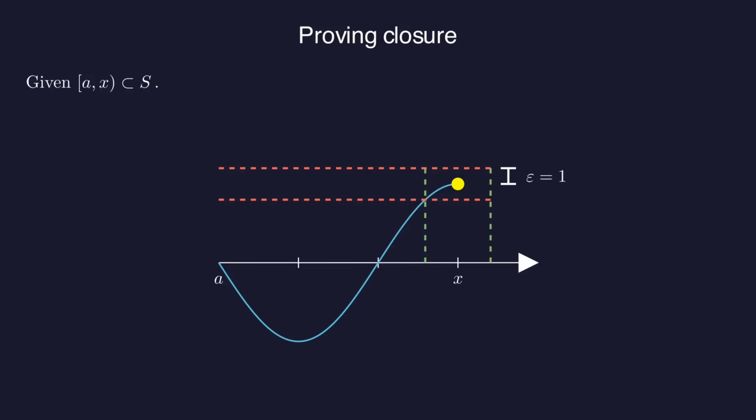Okay, let's take one of the points in the interval to the left of X, call it U. U is a member of S, so F is bounded in the closed interval from A to U. Let's call that bound big M again. Great.